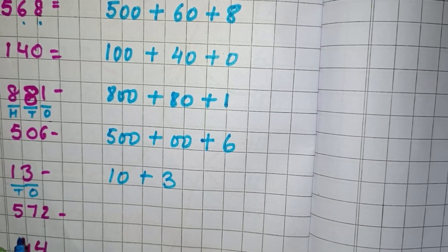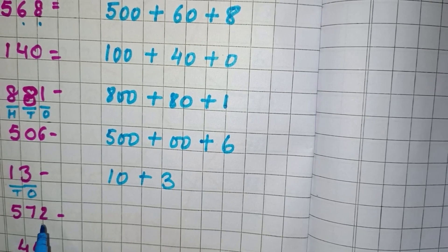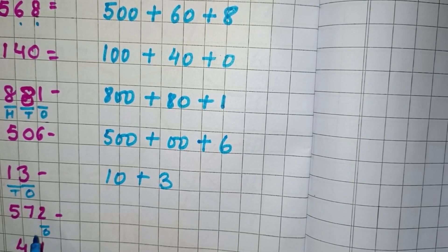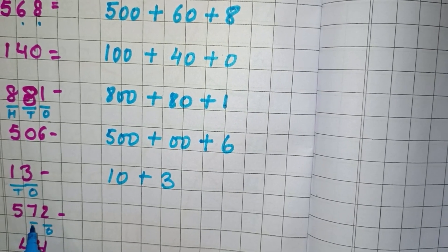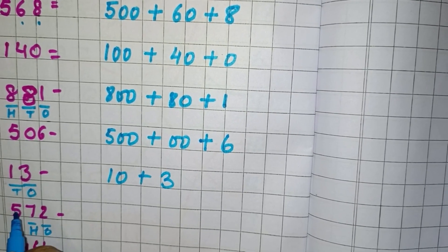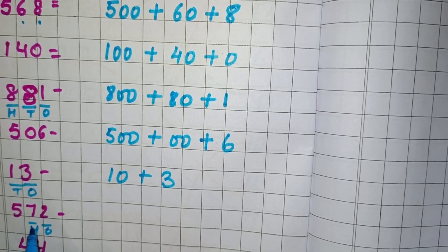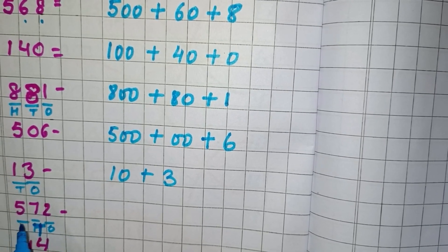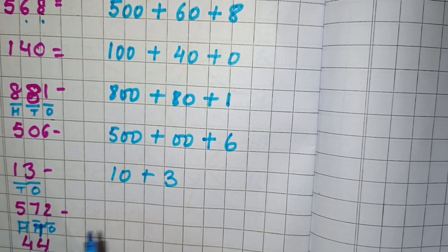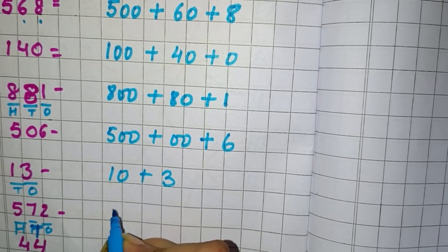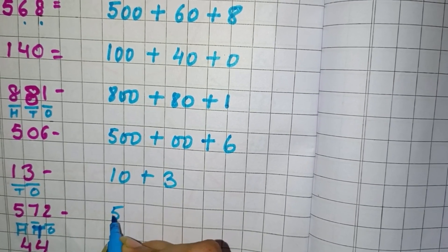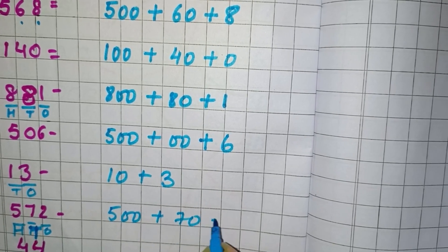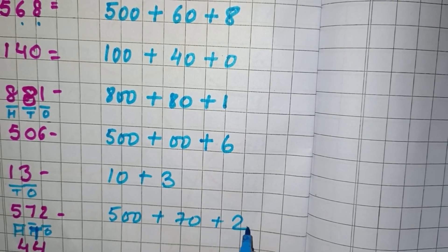Now next we have 572. So we can see 2 is in 1's place, 7 is in 10's place, and 5 is in 100's place. So we will write here 500 plus 70 plus 2.